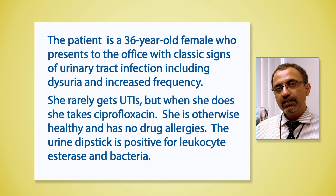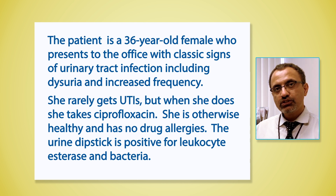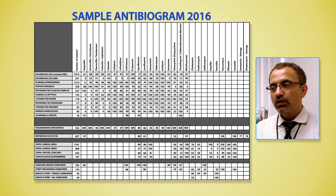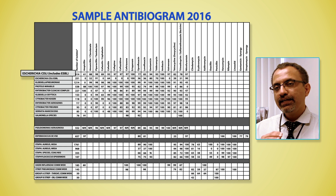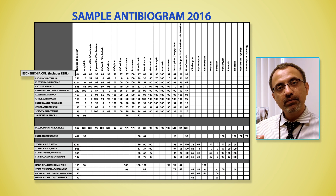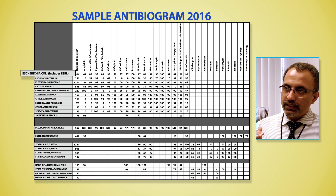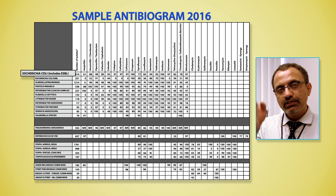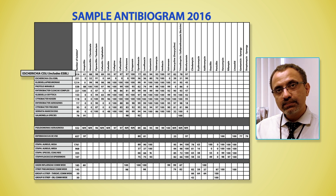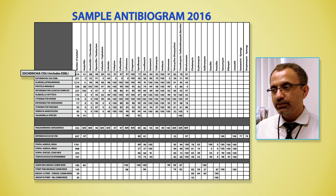For any of the infections you are considering, you should think about what organism would be the most likely. In this case, the most likely organism causing UTIs is E. coli. For E. coli, you need to see what susceptibility data is available, which antibiotics you are going to use, and how it's going to impact your treatment. When you go down in your antibiogram to the row which says E. coli and look at the columns for most common antibiotics — which includes ciprofloxacin, Bactrim, nitrofurantoin, cephalexin, or other cephalosporins that are listed in your antibiogram.